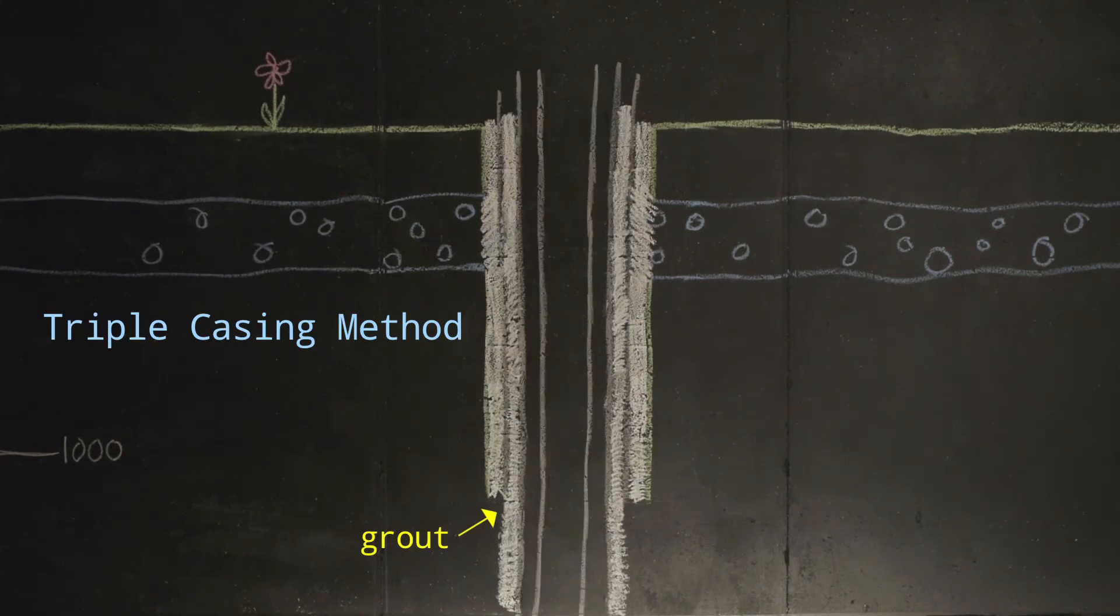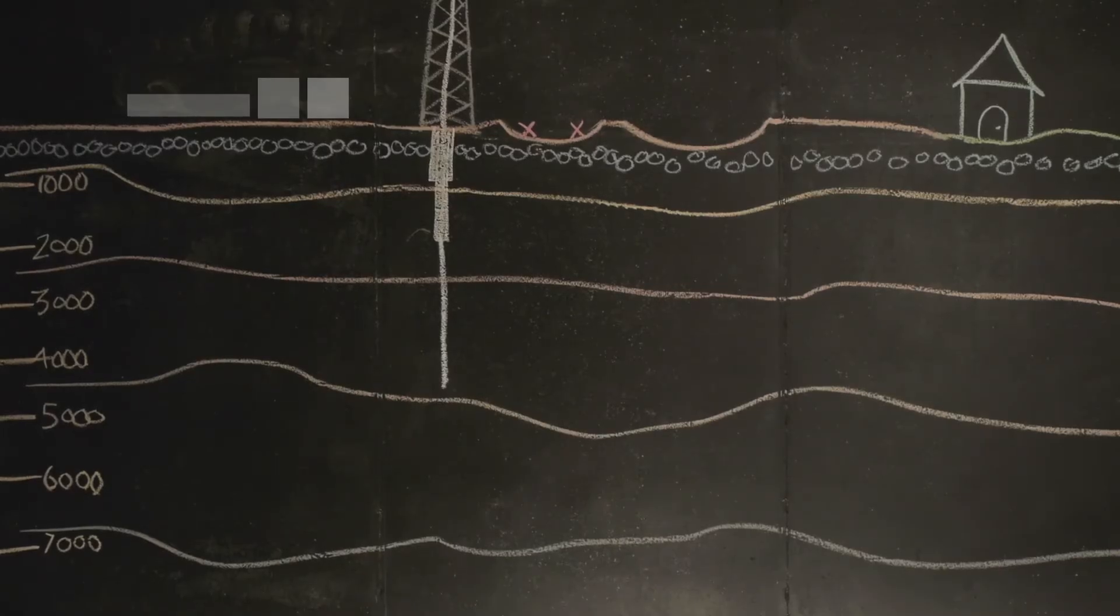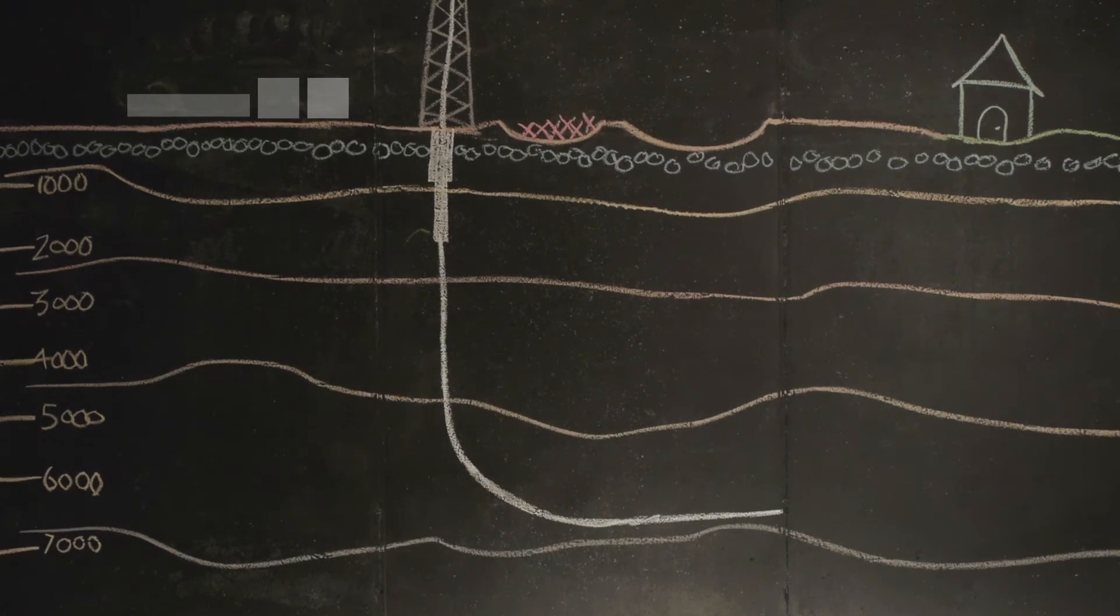This keeps contaminants from migrating up or down the well. Once the shale layer is reached, the drill bit is turned and driven horizontally along the marcellus for another mile or more.